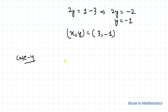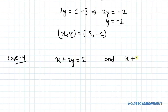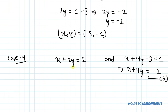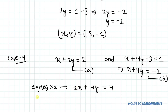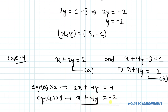Case 4: Taking the opposite of Case 3, let x + 2y = 2 (equation a) and x + 4y + 3 = 1, which implies x + 4y = −2 (equation b). Multiplying equation a by 2 gives 2x + 4y = 4, and equation b by 1 gives x + 4y = −2.